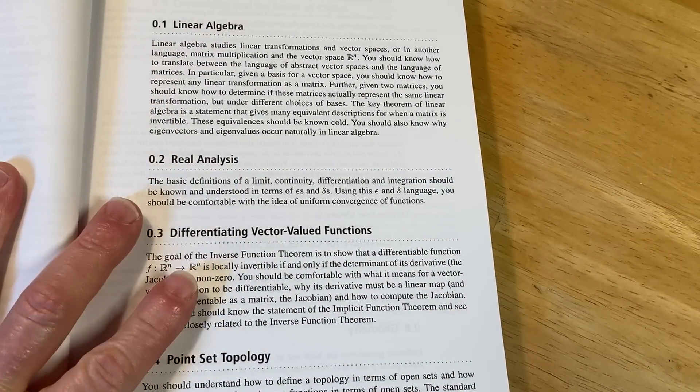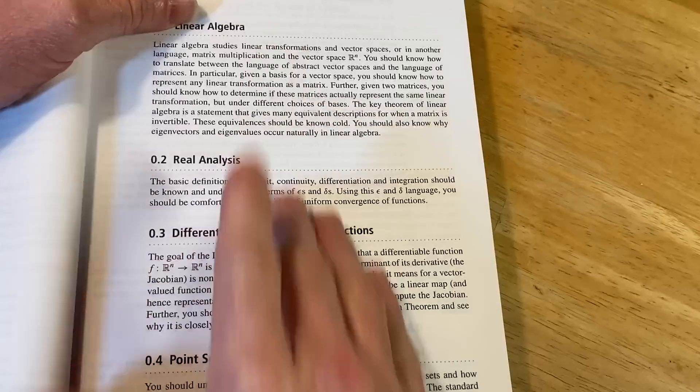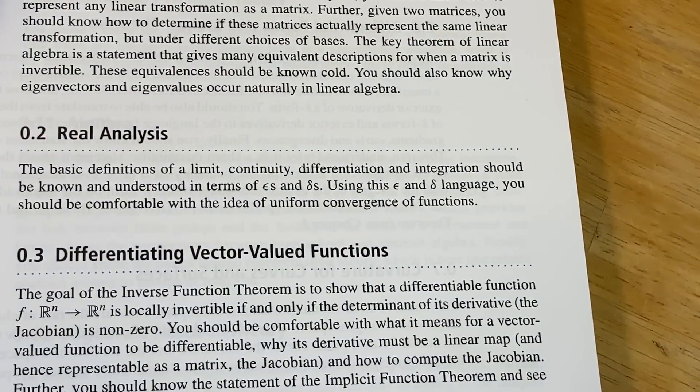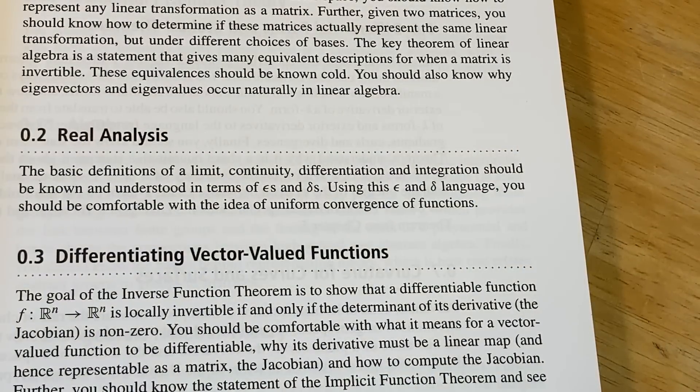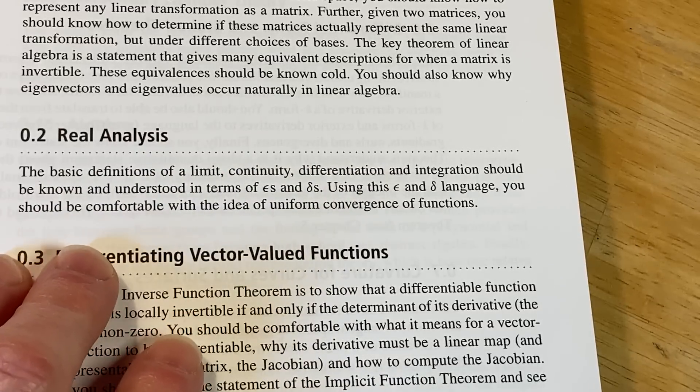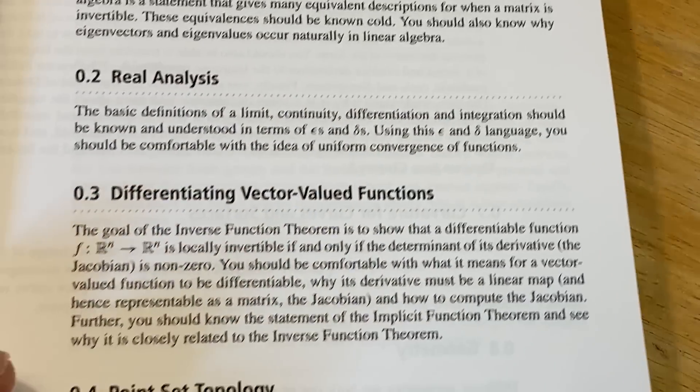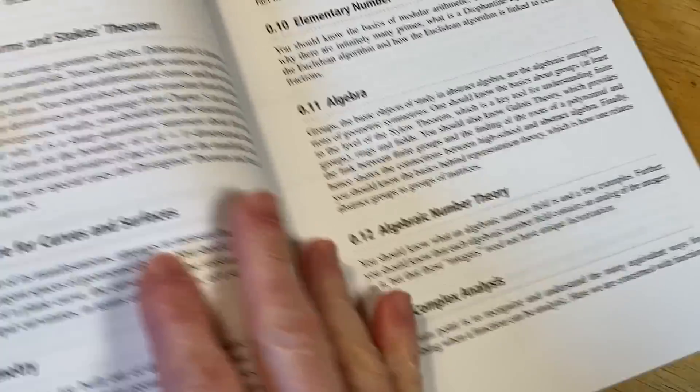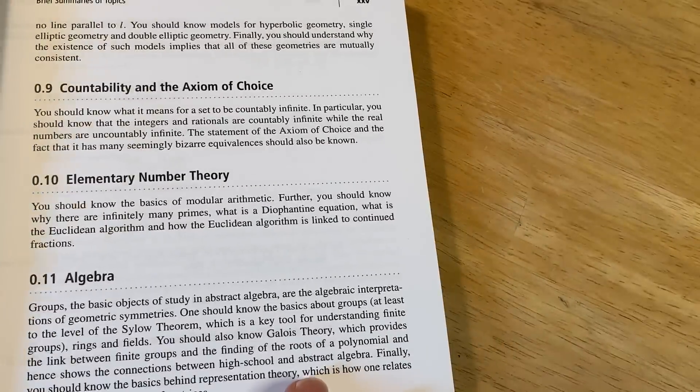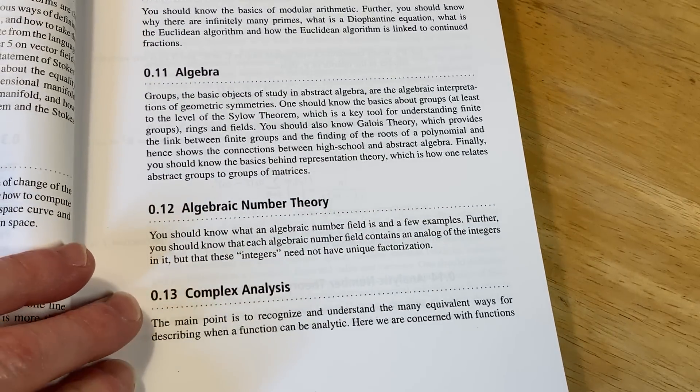And then it gives you a brief summary of the topics, which is really cool, right? So this is helpful because it'll talk about each topic, linear algebra, real analysis. What is real analysis? Let's just look at that. It's not too long to read. This is the basic definitions of a limit. Continuity, differentiation, and integration should be known and understood in terms of epsilons and deltas. Using this epsilon delta language, you should be comfortable with the idea of uniform convergence of functions. Then point set topology, classical Stokes theorem, curvature for curves and surfaces, geometry, accountability in the axiom of choice, elementary number theory, algebra.